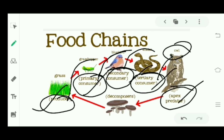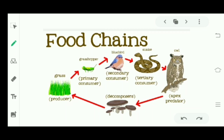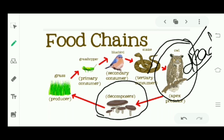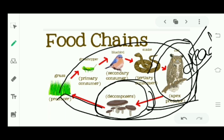Now here is the decomposer. Decomposers are those who decompose — who eat dead plants and animals and decompose them into minerals. Those minerals are then taken up by the producer.